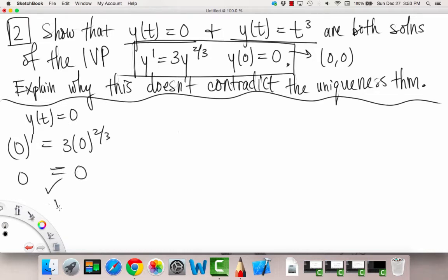So the ODE is satisfied. When we plug in 0 into our equation, into our solution, we find that it is a solution to the IVP because the initial condition is satisfied. So this is a solution.